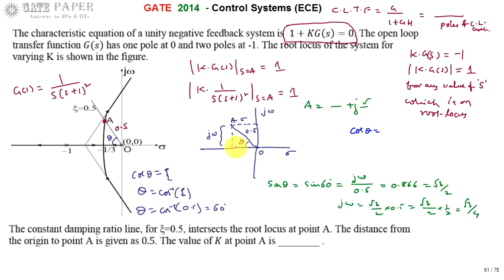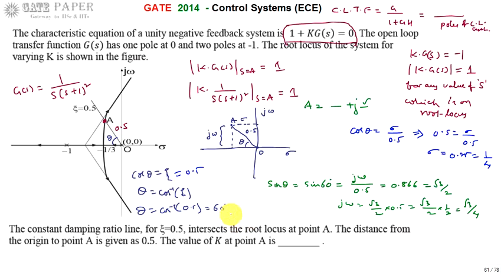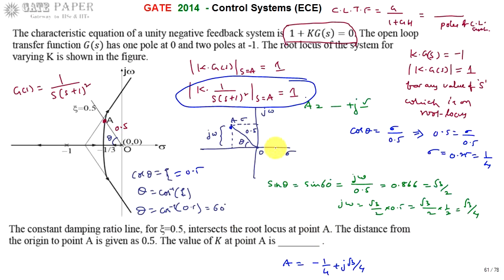For the real part, cos θ = σ / 0.5. Since cos 60 = 0.5, we get σ = 0.5 × 0.5 = 0.25 = 1/4, written as minus 1/4 on the real axis. So point A = −1/4 + j√3/4. This value of A is now substituted into the magnitude equation to find K.